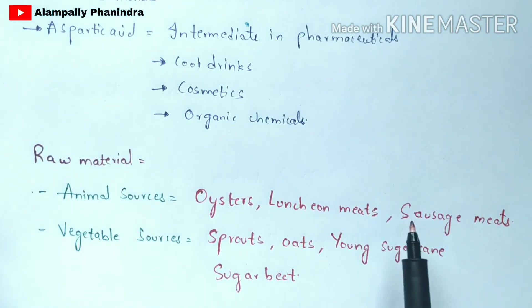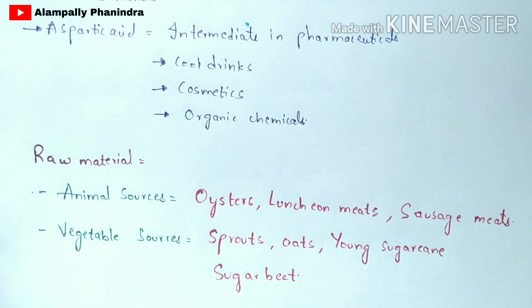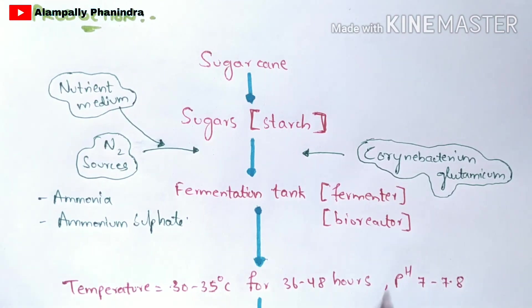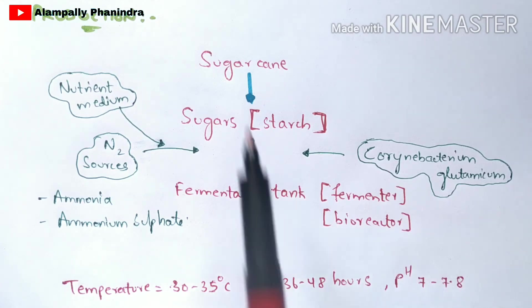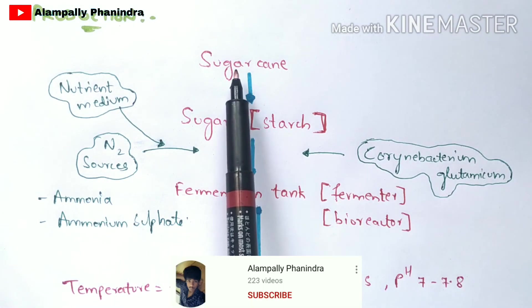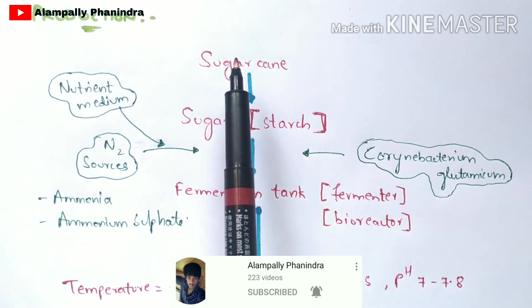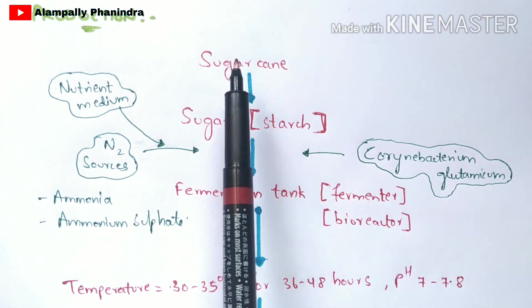Animal sources include oysters, luncheon meats, and sausage meats. Vegetable sources include sprouts, oats, young sugarcane, and sugar beet. The same fermentation process used for glutamic acid applies here — the primary metabolite is converted into the secondary metabolite in the fermentation tank.